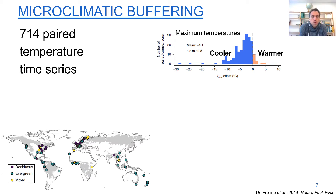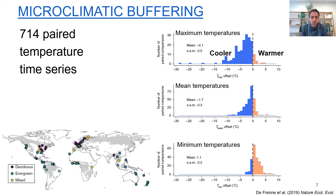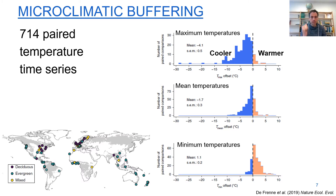We recently quantified all these differences across the globe using a global meta-analysis. Across 700 sites, maximum temperatures are on average 4 degrees cooler inside forests — plotted on the x-axis as the temperature difference inside minus outside. Mean temperatures are on average 1.7 degrees cooler, but minimum temperatures — winter and nighttime temperatures — are on average 1 degree warmer inside the forest. So the temperature variation is buffered: lower maximum temperatures, higher minimum temperatures.